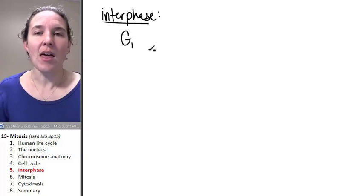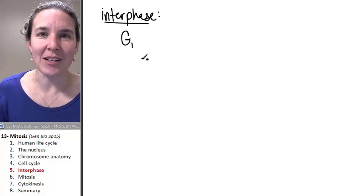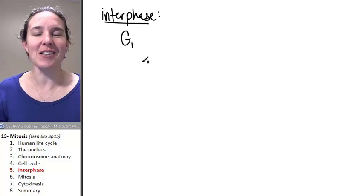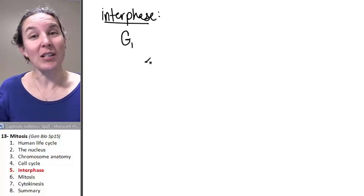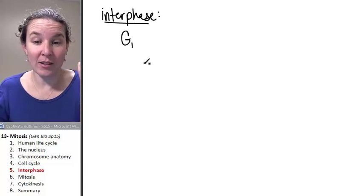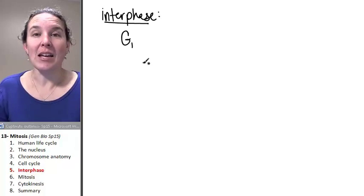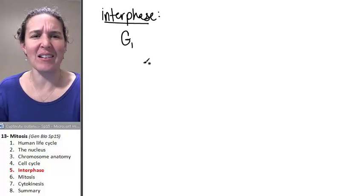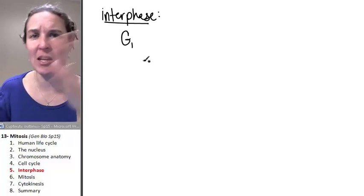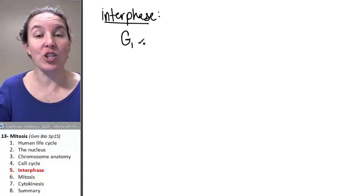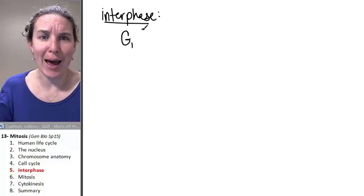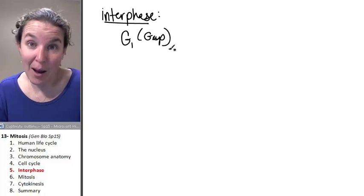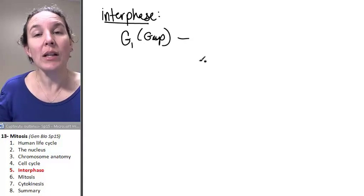Back in the day, they thought that nothing was happening during interphase. This is a common perception that happens where literally many, many times we've looked at a process and gone, nothing's going on there. So let's name it nothing. And G actually stands for gap. This is actually considered the first gap where nothing is happening.